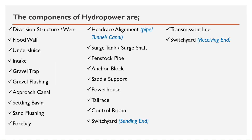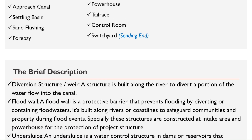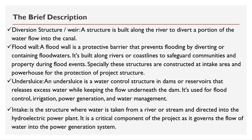Now let's describe all those components briefly. Diversion structure or weir: a structure built along the river to divert a portion of the water flow into the canal. Flood wall: a protective barrier that prevents flooding by diverting or containing floodwaters, built along rivers or coastlines to safeguard communities and property during flood events. These structures are constructed at the intake area and powerhouse for the protection of the project structure.